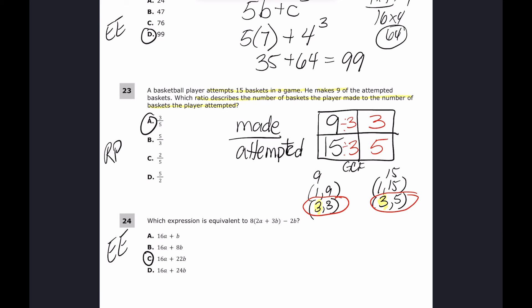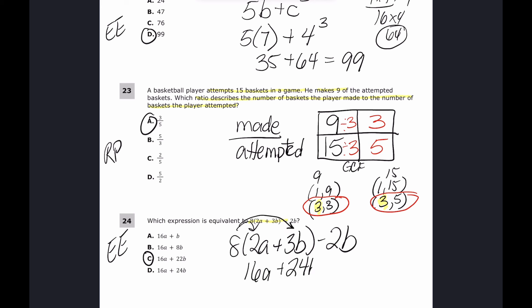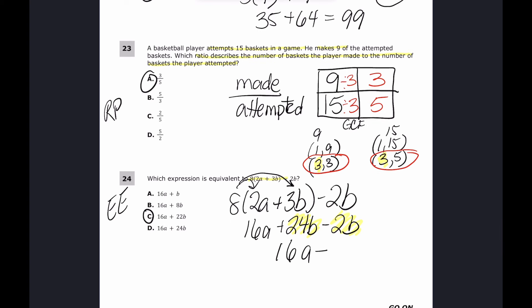For number twenty-four, we need an expression equivalent to 8 times (2a plus 3b) minus 2b. Distributing: 8 times 2a is 16a, and 8 times 3b is 24b. Then minus 2b. Combining like terms: 24b minus 2b is 22b. Final answer: 16a plus 22b. The answer is C.